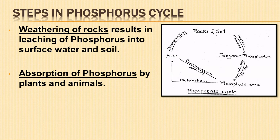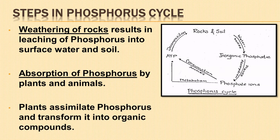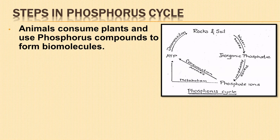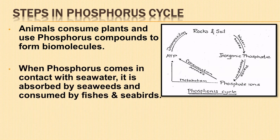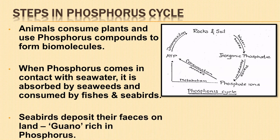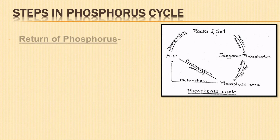The second step in the phosphorus cycle is absorption of phosphorus by plants and animals. Weathering of rocks and minerals releases phosphorus in soluble form. Plants assimilate and transform it into organic compounds. When animals consume these plants, the phosphorus compound is used for the formation of biomolecules like nucleotides. Animals need phosphorus for their teeth, bones, and shells. When phosphorus from the soil enters the sea, seaweeds absorb it, which is then consumed by fish and seabirds. The seabirds deposit their feces on land, which is rich in phosphorus — such feces are known as guano.